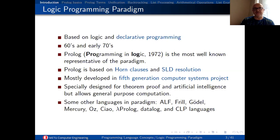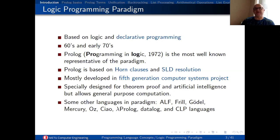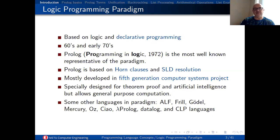People also came up with different constraint logic programming languages like Alfred, Goddard, Mercury, Oz, Chao, Lambda Prolog, Datalog, and so on. Each is targeting some specific algebra and different system of logic, but they are more complicated than Prolog so that they can solve, for example, finite arithmetic as well. Prolog is only capable of handling first-order clauses, which we are going to mention in a minute.